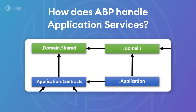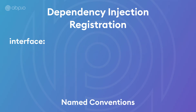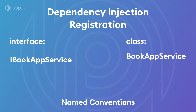We always need to isolate the domain layer as much as possible. As for dependency injection, ABP uses named conventions to register dependencies automatically, and their lifetime is transient. For example, if we have an interface called IBookAppService and the class implementing it is called BookAppService, that named convention is automatically registered with a transient lifetime. If it were called BookService instead, that would need manual registration using the ExposeService attribute or manual registration from the module class.